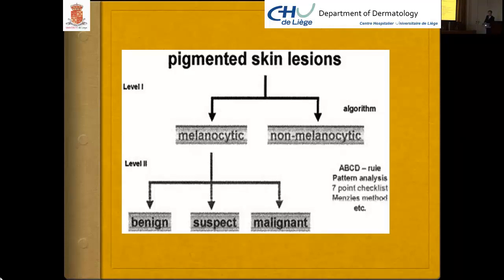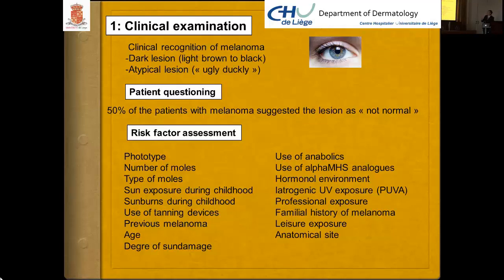Clinical recognition of melanoma is based on dark coloration — light brown to black — and on the fact that it is an atypical lesion, the 'ugly duckling' standing out from the others. A very important point is that 50% of the melanomas we detect are already identified by our patients; we just have to ask them.